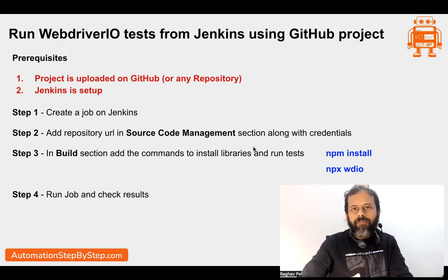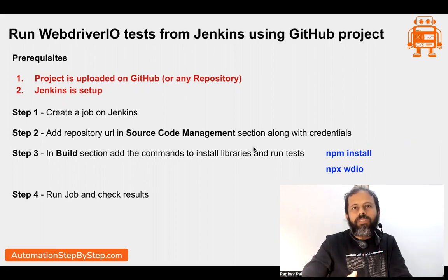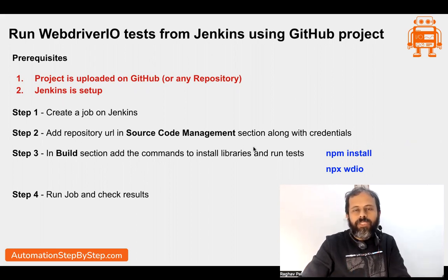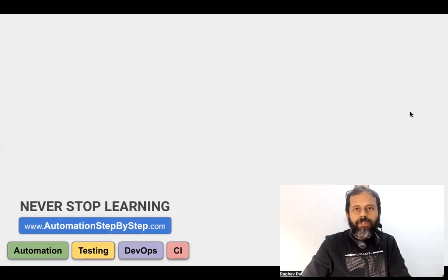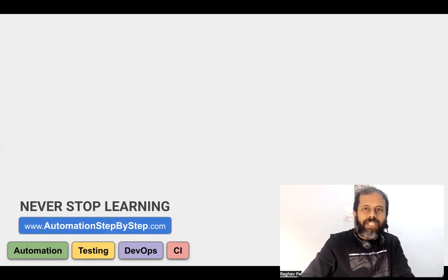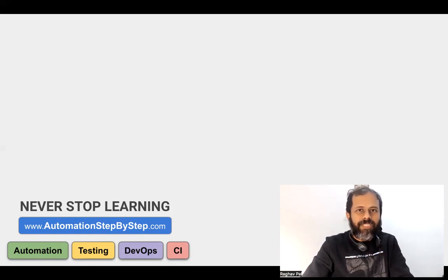We can also chain our jobs. For example, another job created by the dev or IT team could deploy our application to the next environment based on the result of our test job. If our test job is successful, it will trigger the next job and do the deployment. I have a Jenkins masterclass that covers chaining jobs — I will put the links in the description. If you have any questions, let me know in the comment section. I hope this was very useful. Thank you for watching and never stop learning.